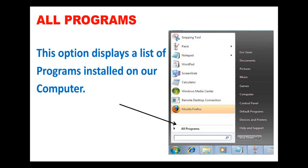So once again, when you click on the start button, this is the menu that will pop up. When you look carefully, you will see an option called 'All programs,' which I have indicated with the help of an arrow. When you click on all programs, you will basically be shown a list of all the programs that are on your computer. With that, we have completed the start menu.